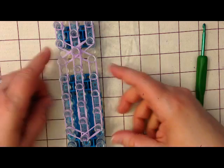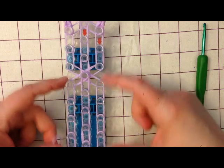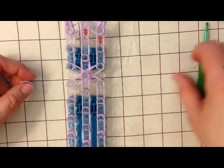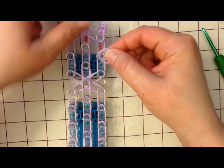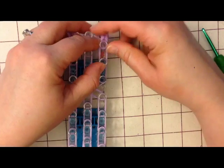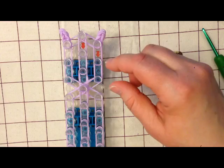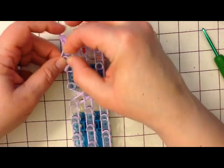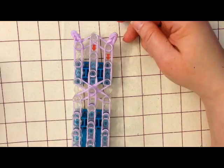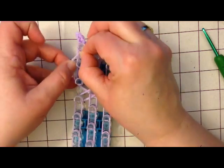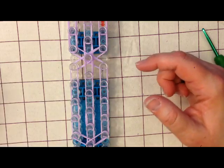Now the thing that makes this one different from some of the others that are out there is that we're actually going to do another layer on the head and the body to make him a little fatter, a little rounder. So taking two bands again, we're going to do on the head. So push your bands down.